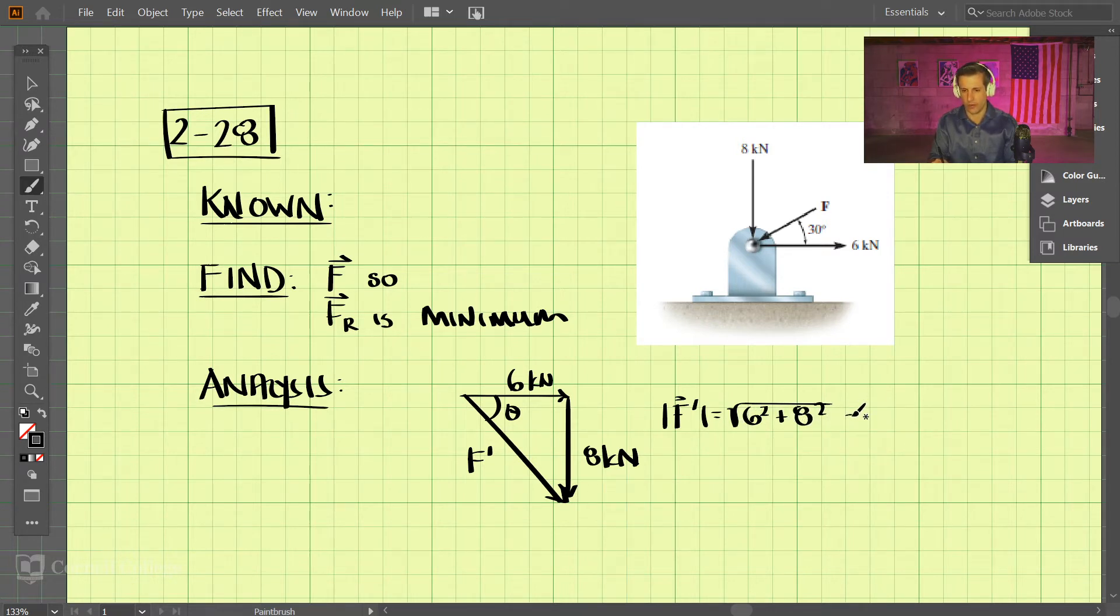To find theta, we can say the tangent of theta—remember that's opposite over adjacent—the tangent of theta is 8 divided by 6.